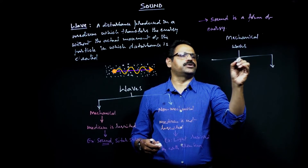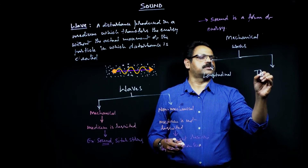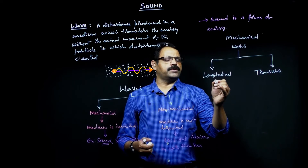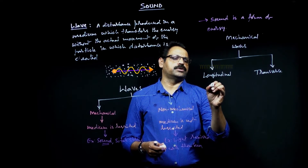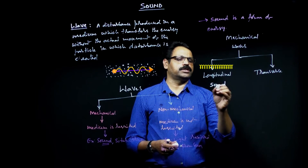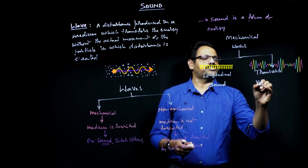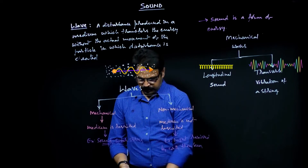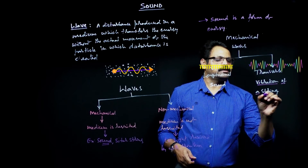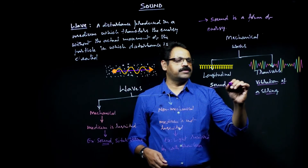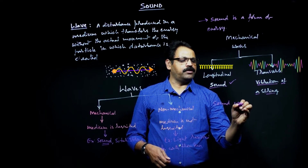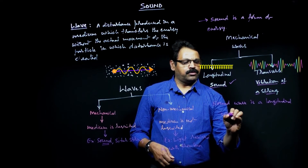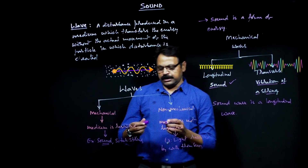Mechanical waves can be further classified into two types: longitudinal waves and transverse waves. Sound is a longitudinal wave. Vibration of a string, such as a sitar string, is a transverse wave. So sound comes under longitudinal waves — that is an important point to remember: sound wave is a longitudinal wave.